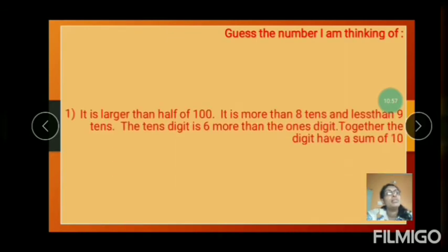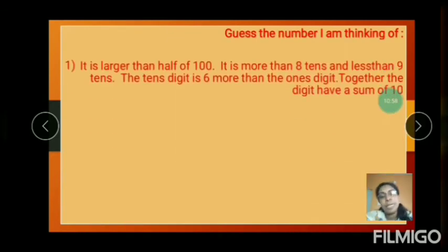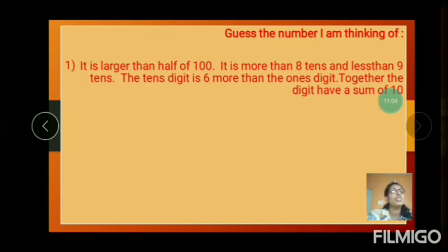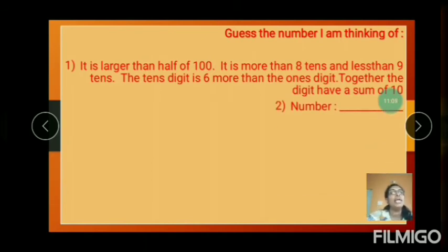Your practice workbook page number 49, question number 15. It is larger than half of 100. It is more than 8 tens and less than 9 tens. The tens digit is 6 more than the ones digit. Together the digits have a sum of 10.